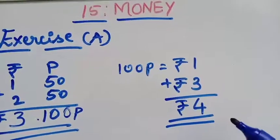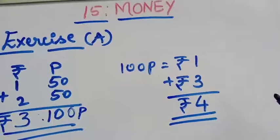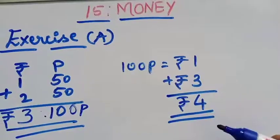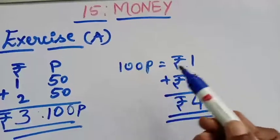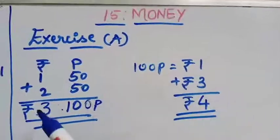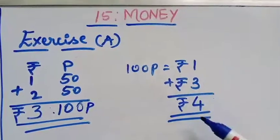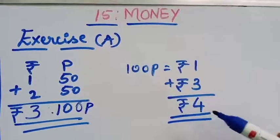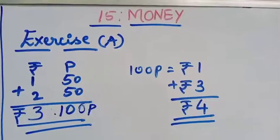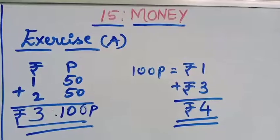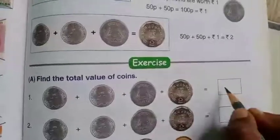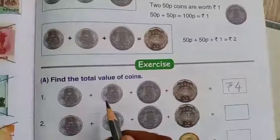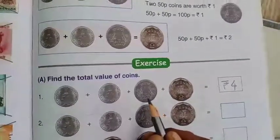Always find the answer stepwise — don't write a direct answer, as it will be very helpful for your coming classes. Remember: 100 paise = ₹1. We got ₹3, added the converted ₹1, giving ₹4. Let's write the answer ₹4 in the box. So 50p + 50p + ₹1 + ₹2 = ₹4.